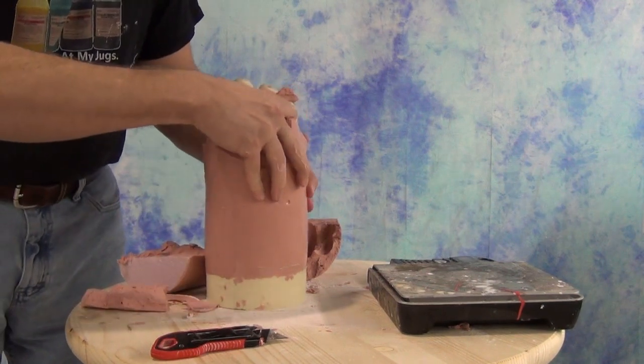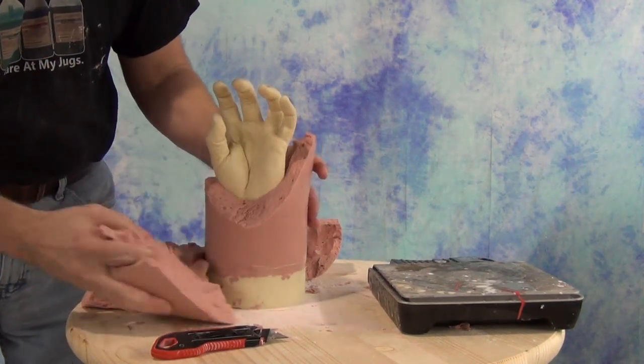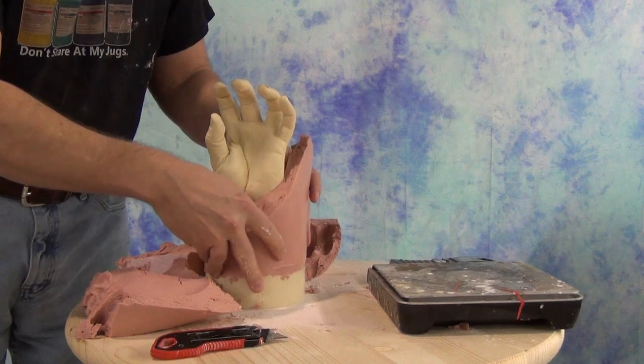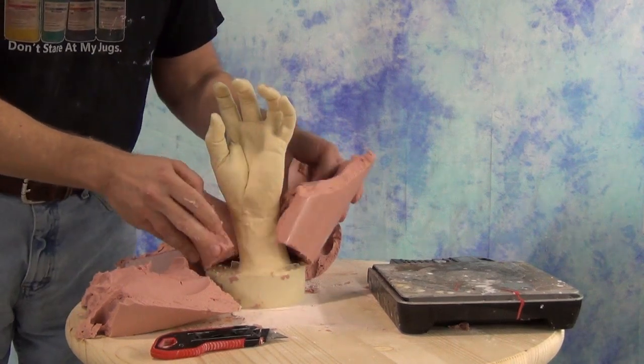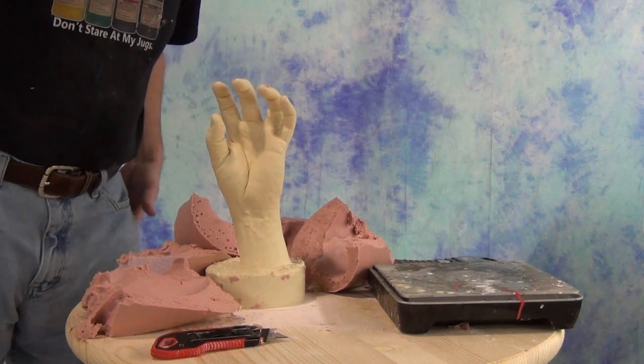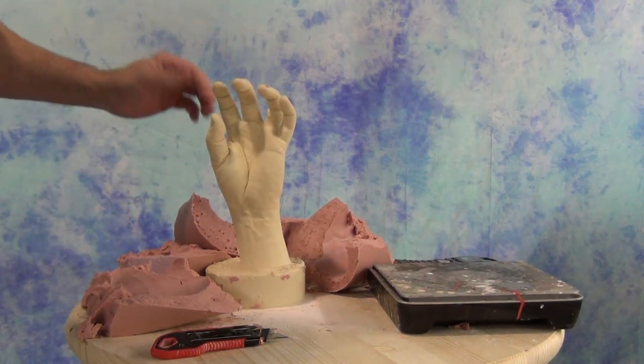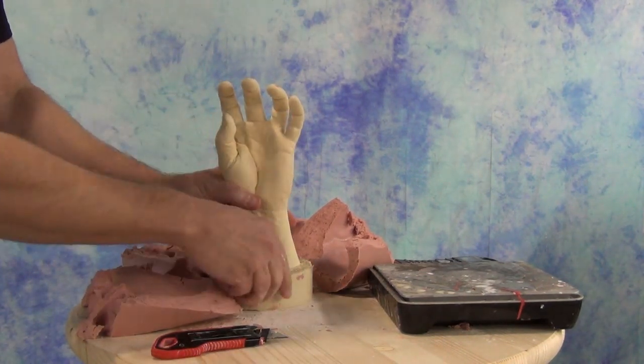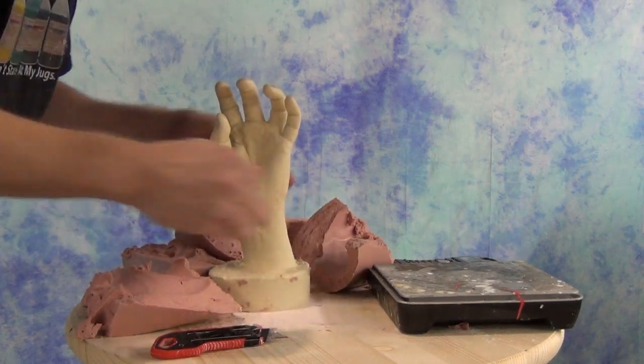A quick aside here about all of the supplies used here. I'm going to put product links in the video description, so be sure to check that out. Things like the mold tube that we used for the hand, as well as the alginate, and of course the resin. I'll put links to all those in the video description.